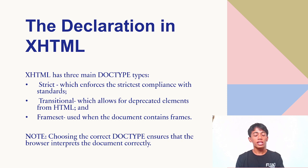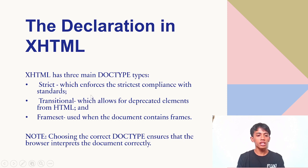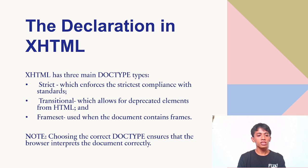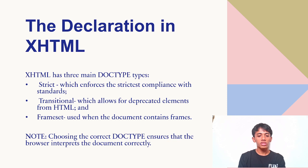The declaration in XHTML — XHTML has three main doctype types. First is strict, which enforces the strictest compliance with standards. Second is transitional, which allows deprecated elements from HTML. Last is frameset, used when the document contains frames.